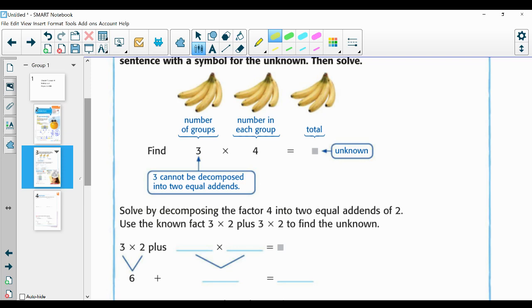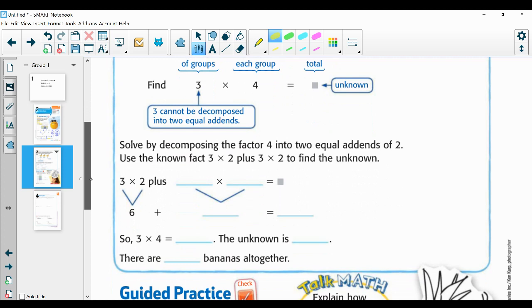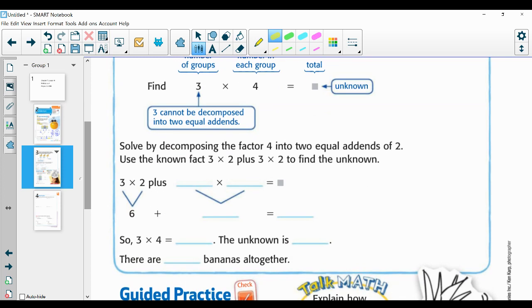Three cannot be decomposed into two equal addends. So I'm going to solve by decomposing the factor 4 into two equal addends of 2, and use the known fact of 3 × 2 plus 3 × 2 to find the unknown. So three I can't make into two equal numbers, but I can do that with four. So I'm going to multiply each of my twos by three. So 3 × 2 plus 3 × 2, because remember I'm doing it twice, equals the unknown. 3 × 2 equals 6. 3 × 2 equals 6. 6 + 6 equals 12. So 3 × 4 equals 12. The unknown is 12.